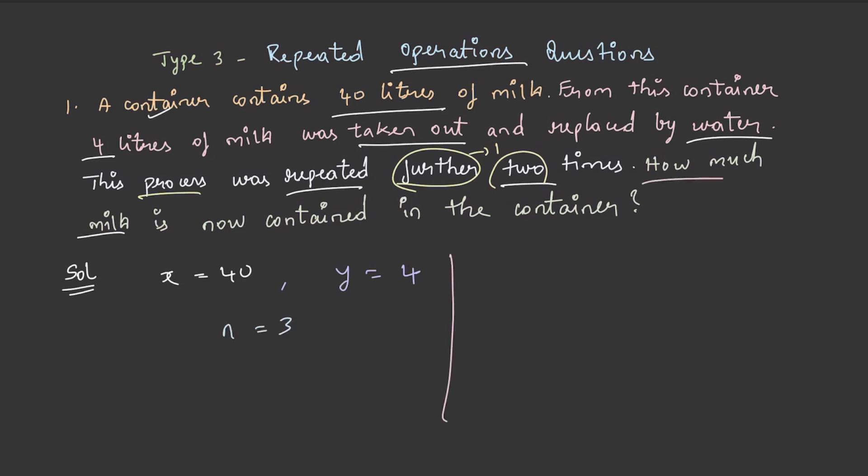We need to find how much milk is contained in the container. How do we determine the quantity of milk? By using the formula: quantity = x × (1 - y/x)^n.